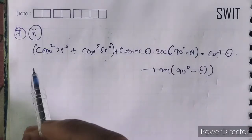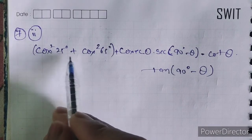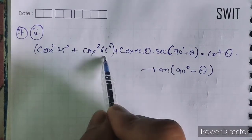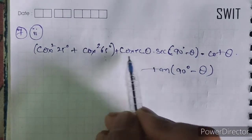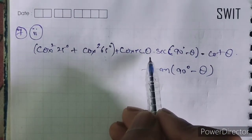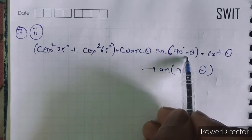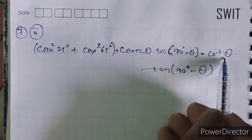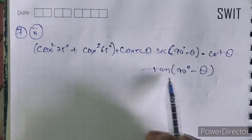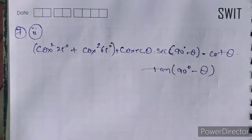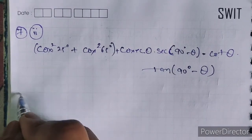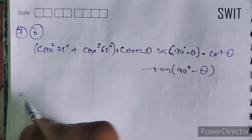Next question: cos square 25 degree plus cos square 65 degree plus cos theta into sec(90 - theta) minus cot theta into tan(90 - theta). Let's solve it quickly.